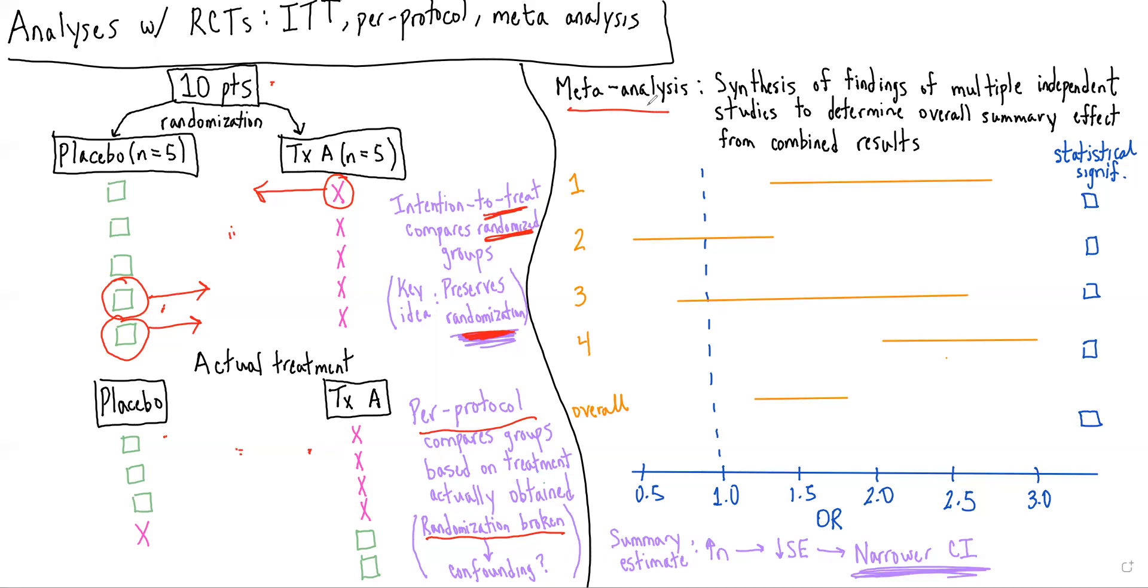So say there are these four studies that we're looking at for a potential association. And these are the odds ratios that are obtained for each of the studies. We see that in study one, we get a statistically significant result because the 95% confidence interval, which is being portrayed by this straight line, does not cross our null value of 1.0.